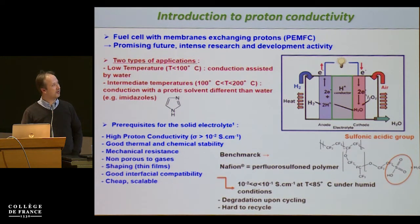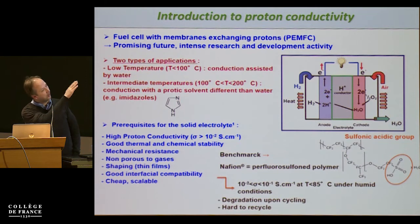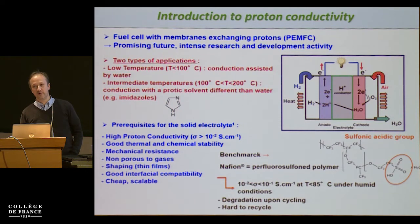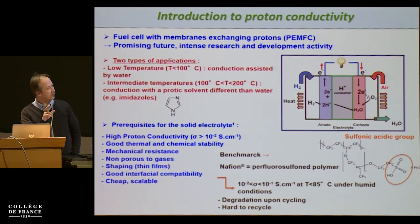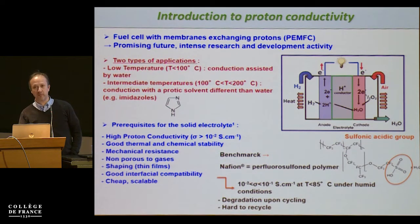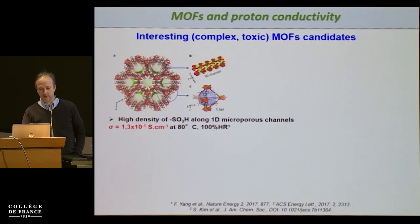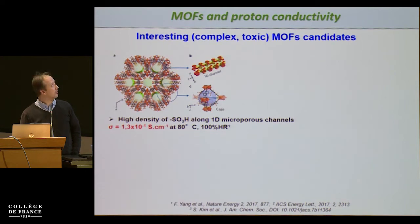The benchmark material in the literature is Nafion — a perfluorinated polymer with a sulfonic group at the end of the chain, making it quite amphiphilic. It has very good selectivity and is already used for some applications, but it suffers from degradation after cycling and is difficult to recycle. A lot of people are therefore trying to find alternative materials, not only MOF but other types of acidic solids. In the past five to ten years, many groups worldwide have investigated MOFs as possible candidates for proton conductivity membranes.